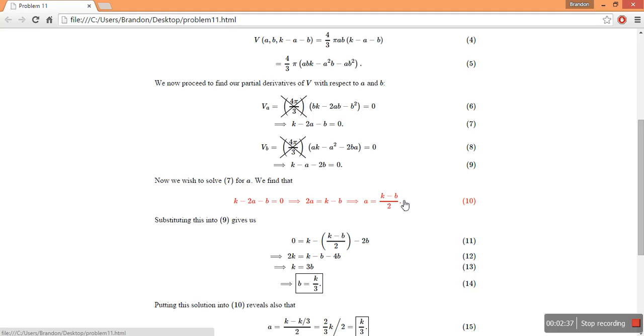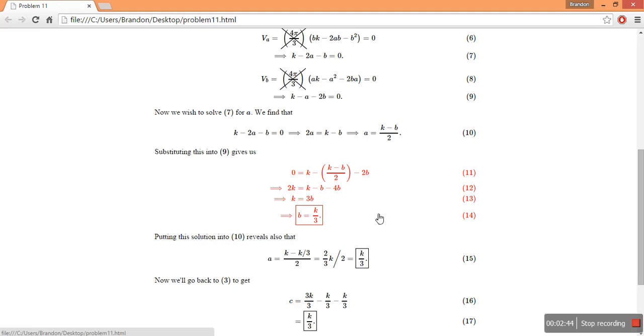So in 10 I've simply found a in terms of b, and in 11, 12, 13, and 14 I've substituted this into 9 up above here. And I found that b is equal to k on 3.